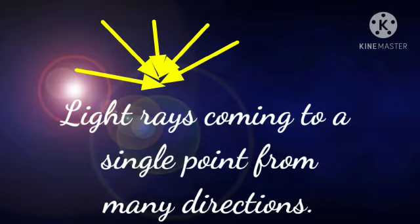When a teacher asks you to collect your notebooks on her table, then you all take out your notebooks and keep it on teacher's table at one place. Means the notebooks are collected at one point. Similarly, the rays when get collected at one point, we call it as convergent light.